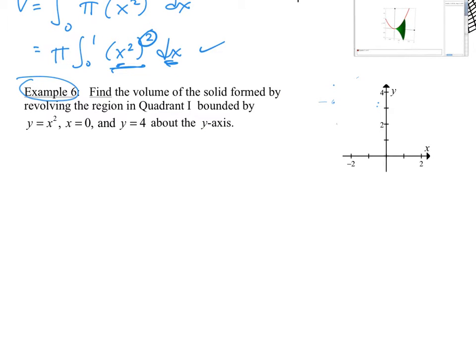Example number six, find the volume of the solid formed by revolving the region in quadrant one bounded by y equals x squared, x equal to 0, y equal to 4 about the y-axis. We need a picture. So y equals x squared. That would go through these. And it does say the first quadrant.